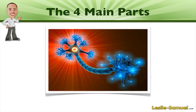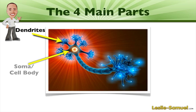Let's talk about the four main parts of a neuron. First we have the dendrites and these are points where the cell receives inputs from other cells. Then we have the soma or the cell body and this is the part of the neuron that is most like any other cell. It is also a place where the neuron receives input and it's a place where there's a lot of processing happening. You can find the nucleus of the cell inside the cell body.